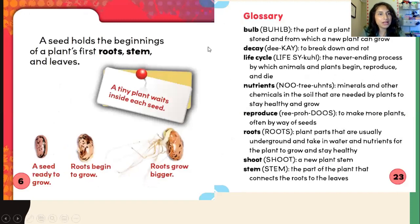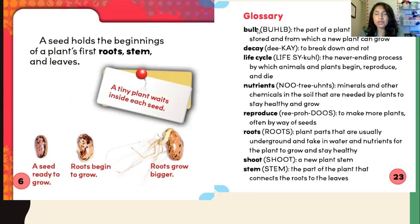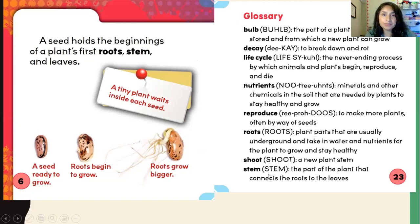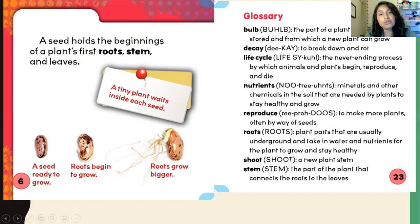Let's go over a couple of words we might encounter during our reading: bowl, decay, life cycle, nutrients, reproduce, roots, shoot, and stem. Let's pause and think — are any of these words tricky for you? We can use our reading skills and context clues to learn about our vocabulary words of the week.